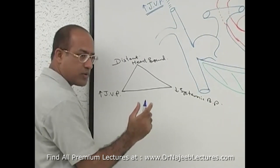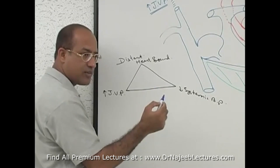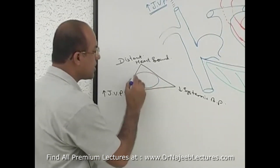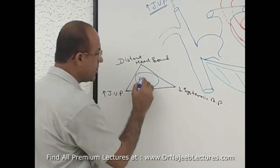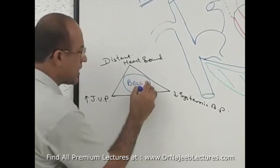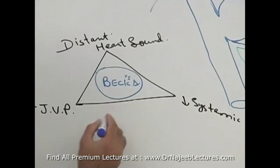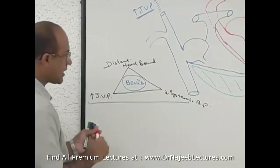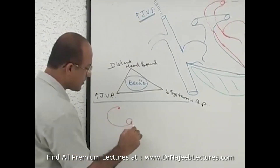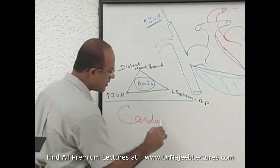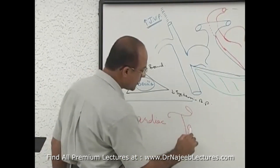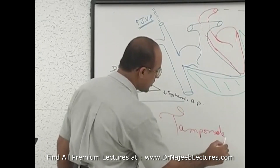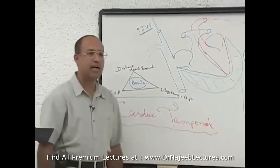This situation, produced by pericardial effusion compromising the function of the right and left ventricles, is called Beck's triad. And clinically, we say that patient is suffering with cardiac tamponade.